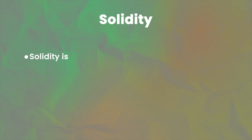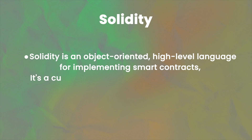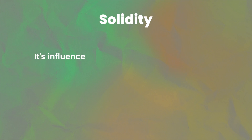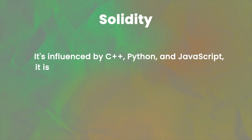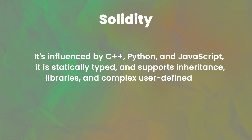Solidity is an object-oriented, high-level language for implementing smart contracts. It's a curly bracket language designed to target the Ethereum Virtual Machine. It's influenced by C++, Python, and JavaScript. It's statically typed, and it supports inheritance, libraries, and complex user-defined types.